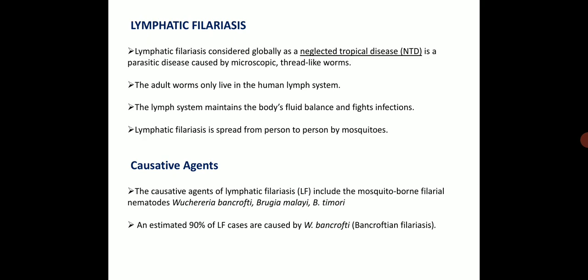Next is lymphatic filariasis, which is globally considered a neglected tropical disease. It is a parasitic disease caused by microscopic thread-like worms. The adult worms only live in the human lymph system, which maintains the body's fluid balance and fights infection. Lymphatic filariasis is spread from person to person by mosquito. The causative agents include mosquito-borne filarial nematodes: Wuchereria bancrofti, Brugia malayi and Brugia timori. However, 90% of lymphatic filariasis is caused by Wuchereria bancrofti, known as Bancrofti filariasis.